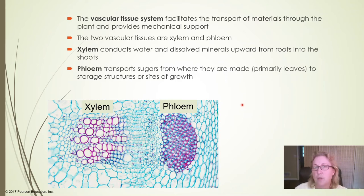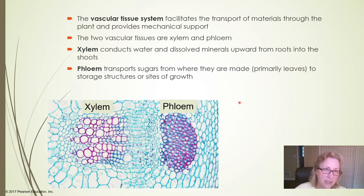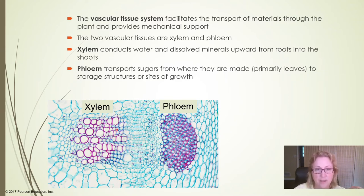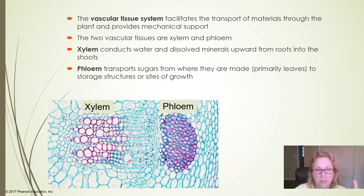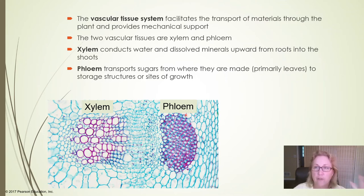The vascular tissue transports water and minerals from the roots up to the rest of the plant. Sugar is manufactured in the leaves during photosynthesis and then transported down to the roots, which don't photosynthesize. There are two different types of vascular tissue: the xylem, which transports water and some minerals from roots to leaves, and the phloem, which transports sugary solutions, amino acids, and other things from the leaves to non-photosynthetic structures of the plant.